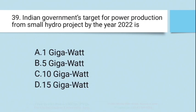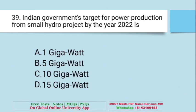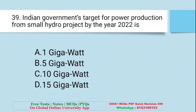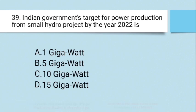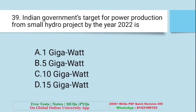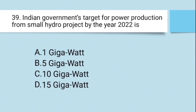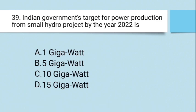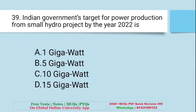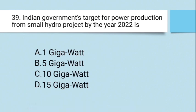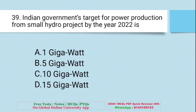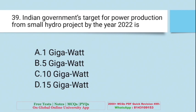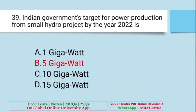Question: Indian government's target for power production from small hydro projects by the year 2022 is — A. 1 GW, B. 5 GW, C. 10 GW, D. 15 GW. The right answer is B — 5 GW.